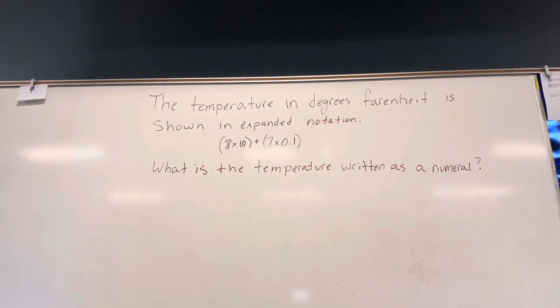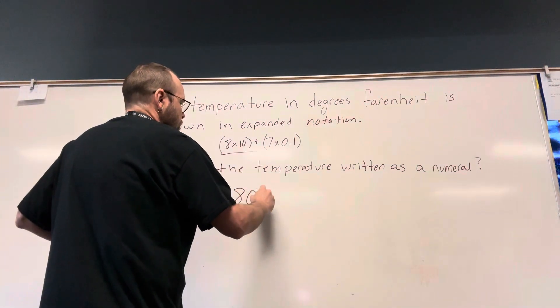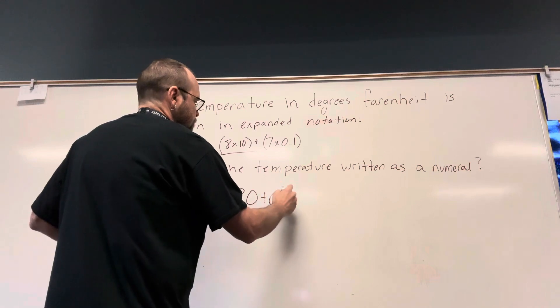8 times 10 is 80, and then 7 times 1 tenth is 7 tenths, so it's 80 and 7 tenths.